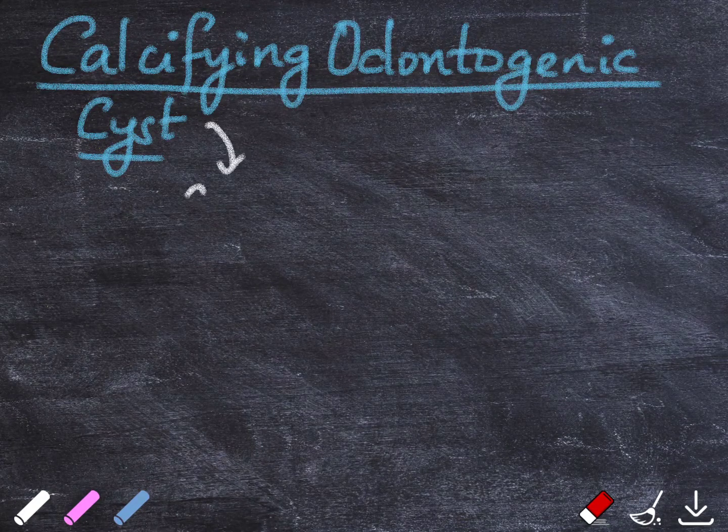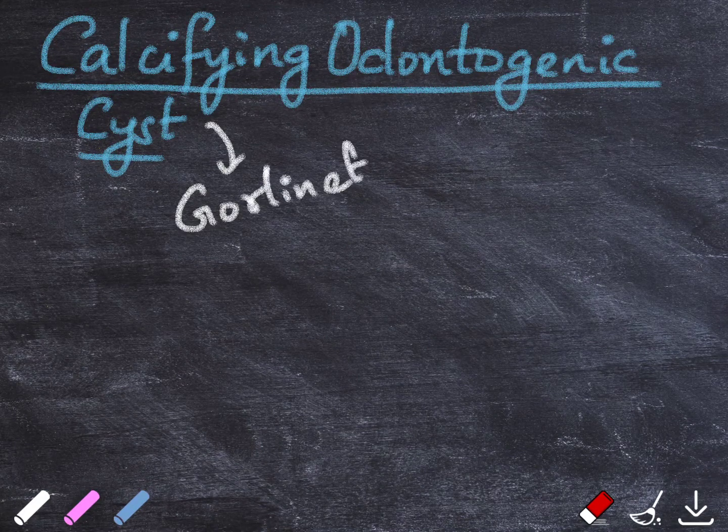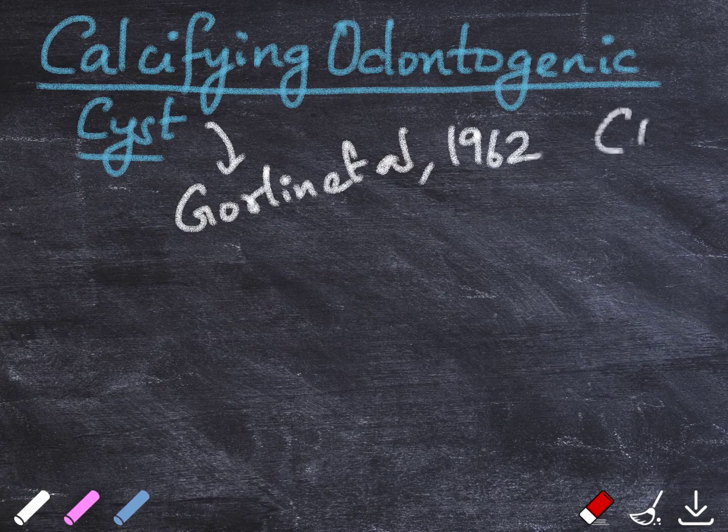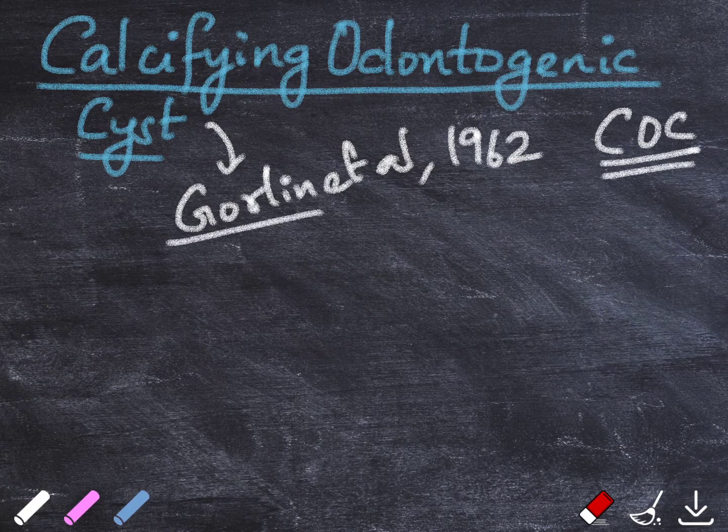Calcifying odontogenic cyst was first described by Gorlin et al. in the year 1962. Because of his contribution, it was termed as Gorlin cyst.